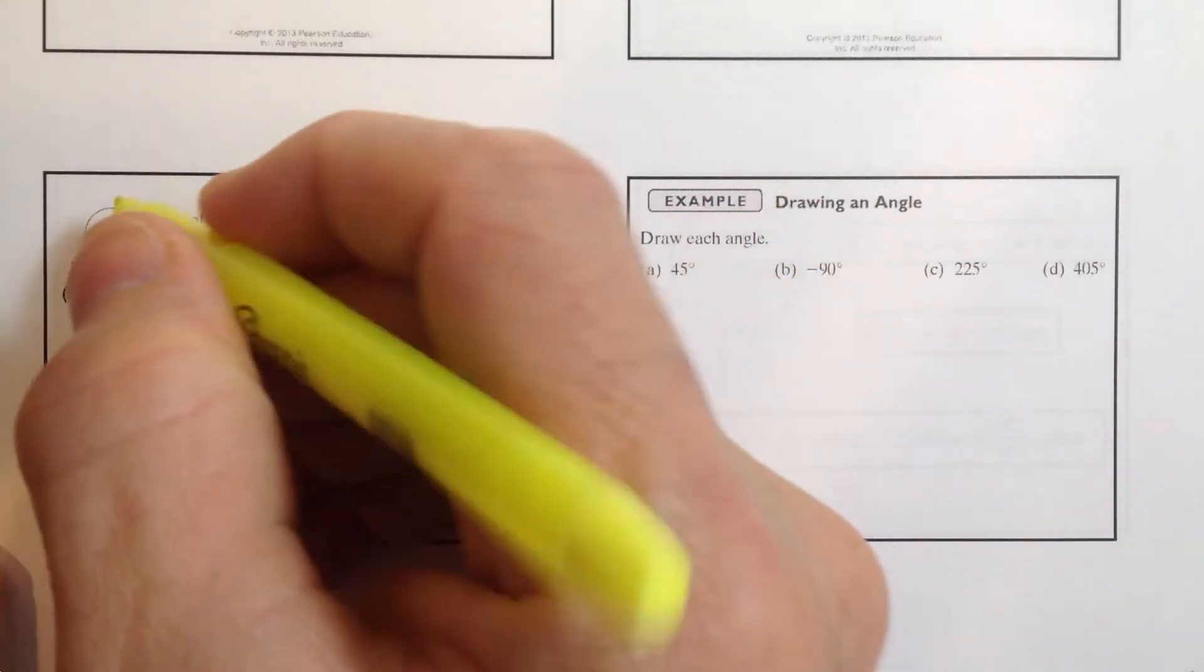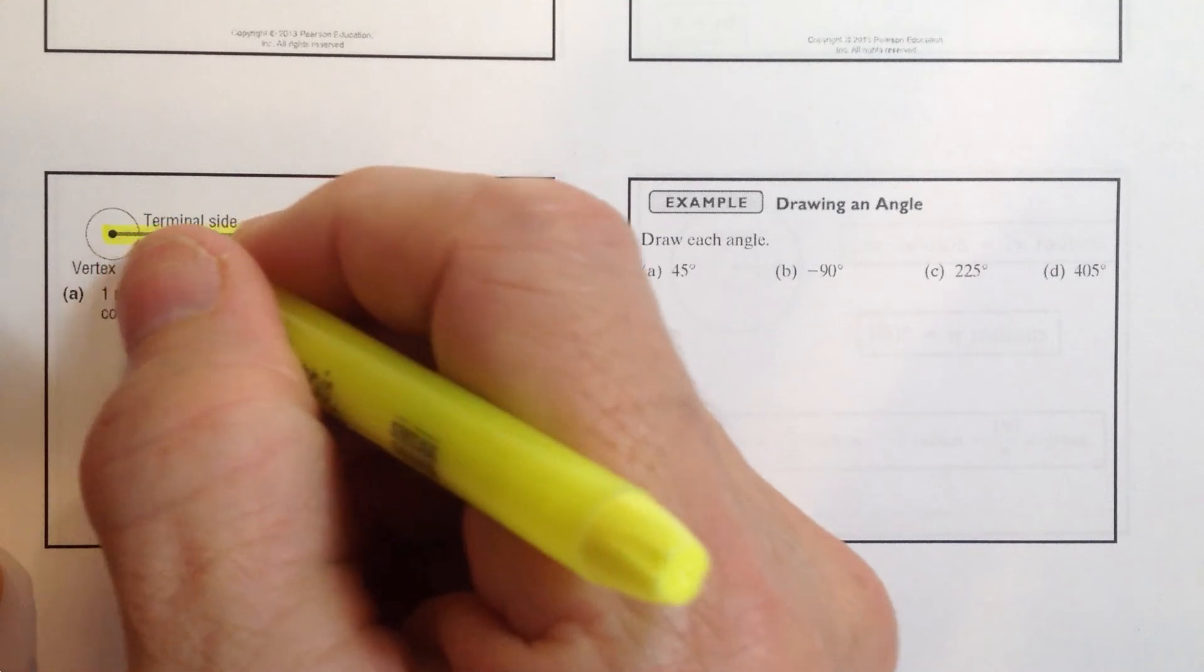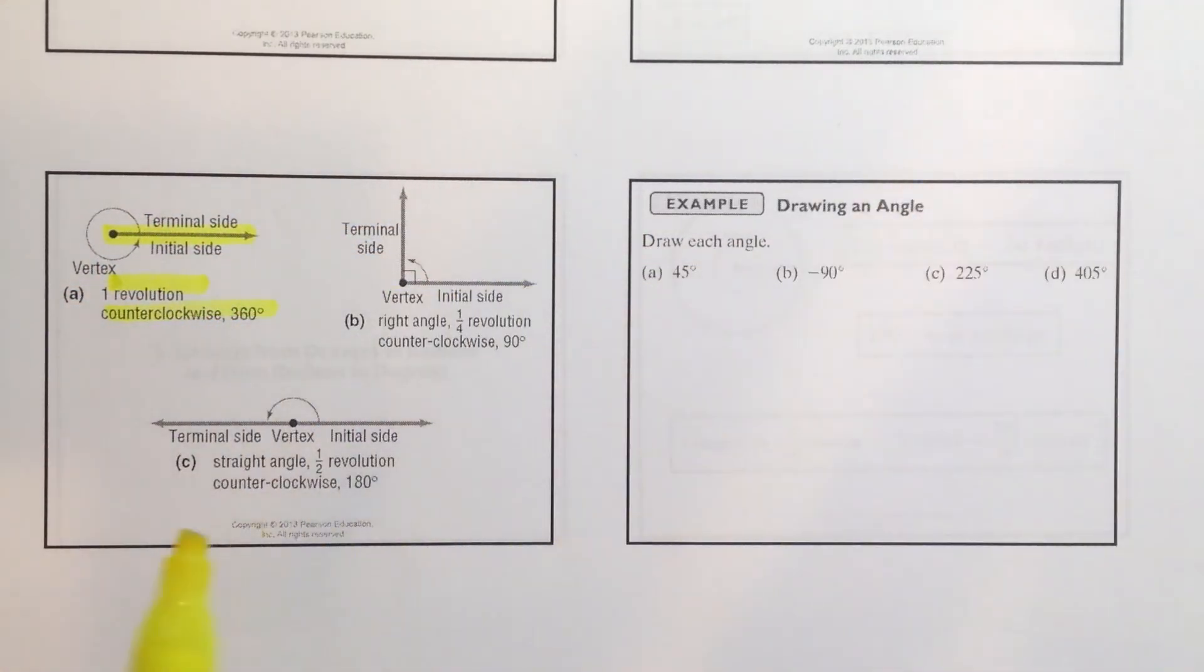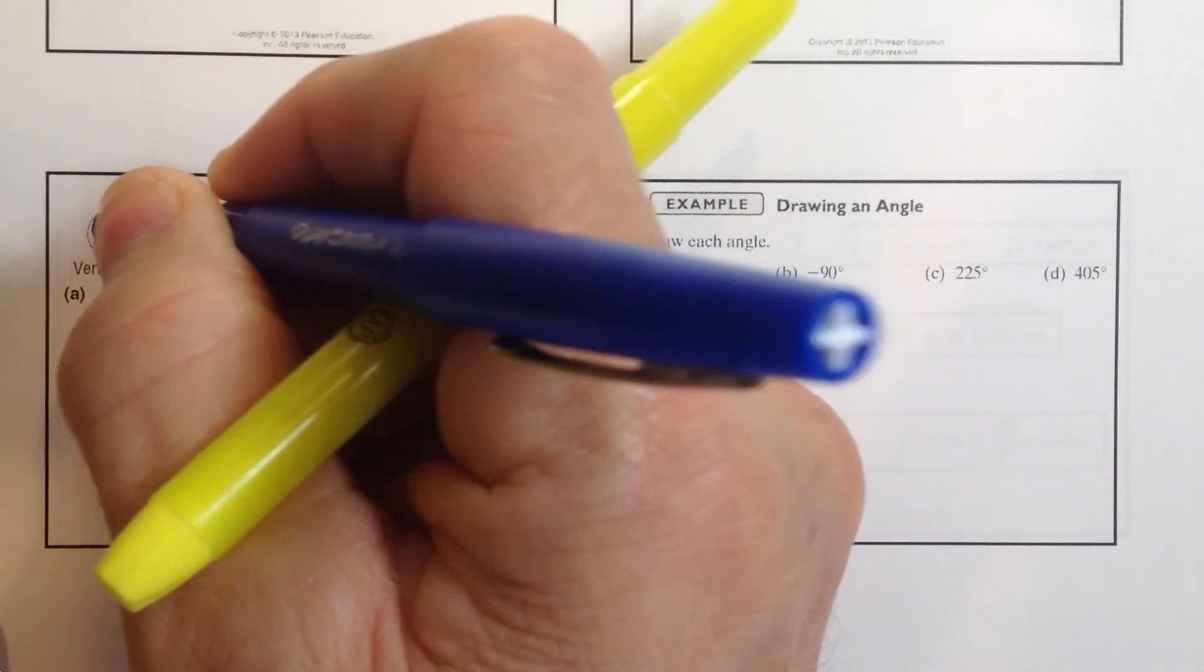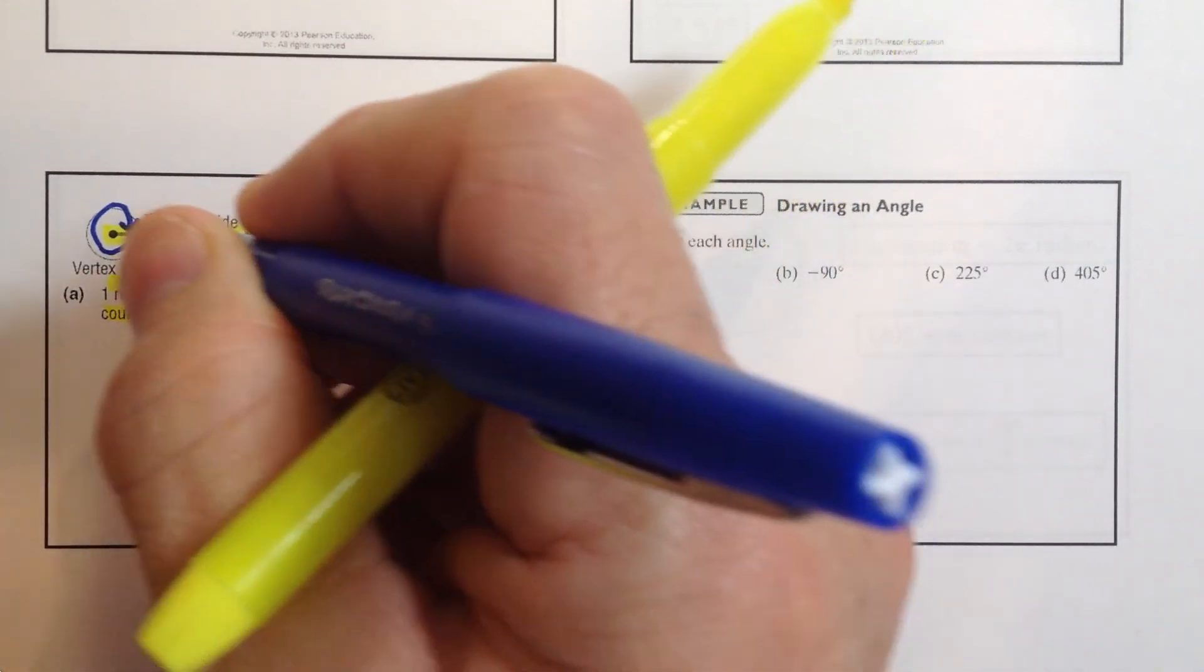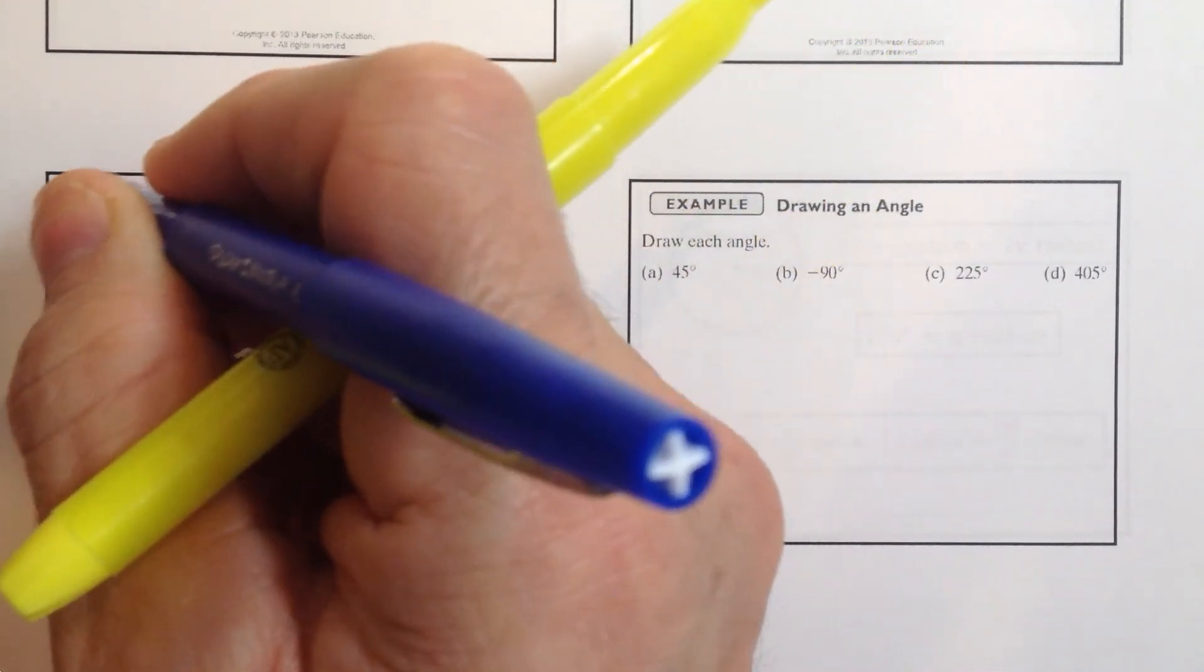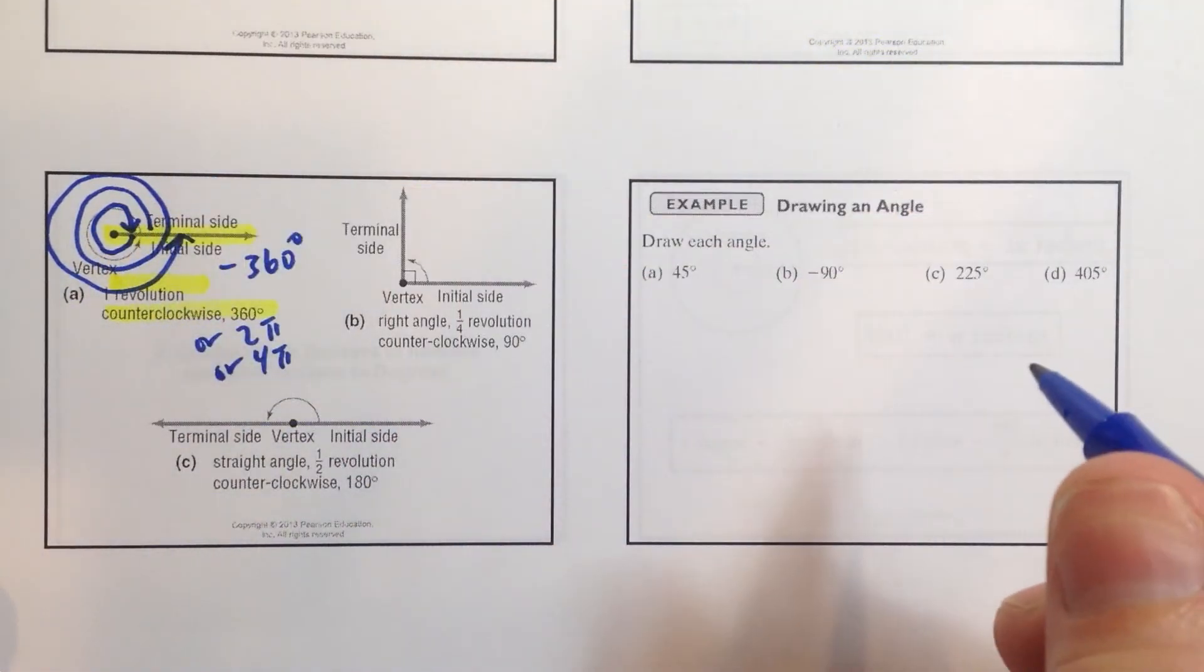And then, moving along, the terminal side and the initial side are the same. If we wrap one revolution counterclockwise, 360 degrees, now we could call that one revolution clockwise. Or, clockwise, we can go in this direction. And that would be negative 360 degrees. Or, we can call it 2 pi. Or, we can call it, if we wrap two times around, two times around, we can call it 4 pi. But that would be one, two times around, that would be an angle of 4 pi radians.